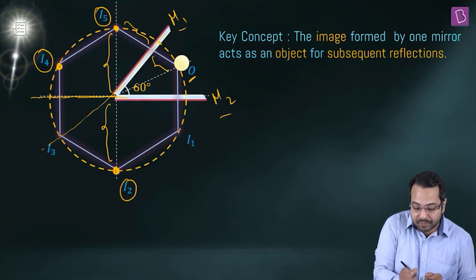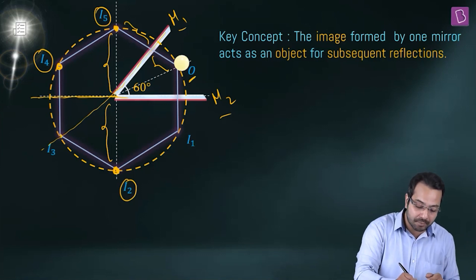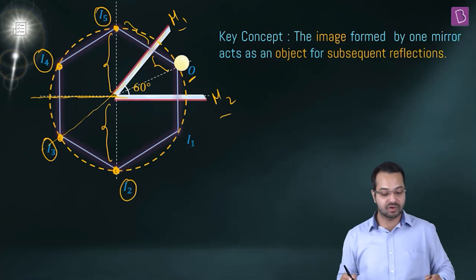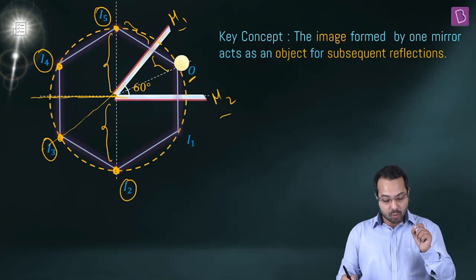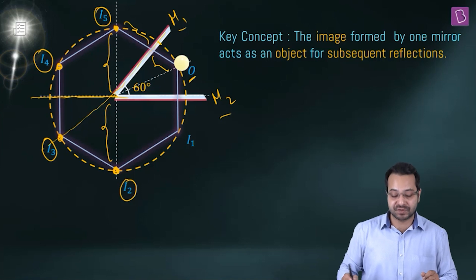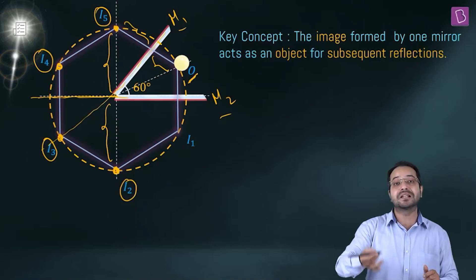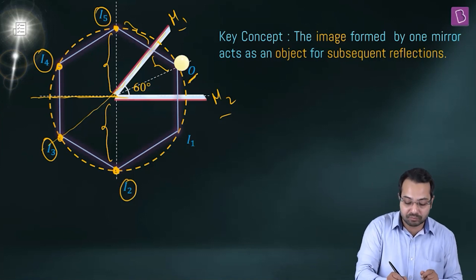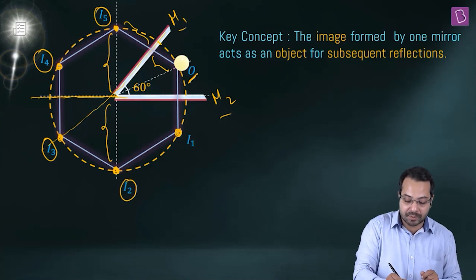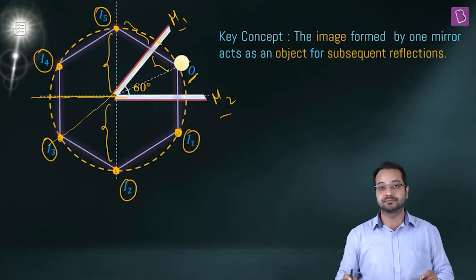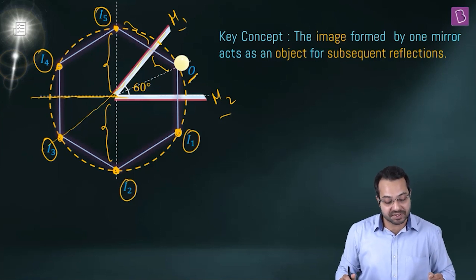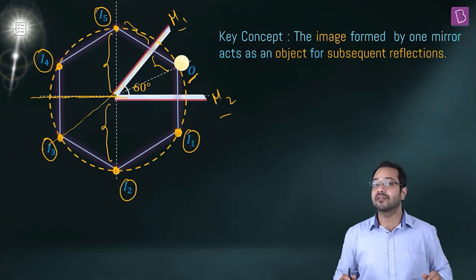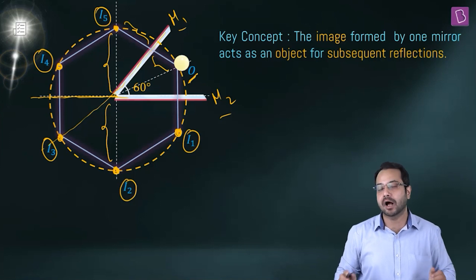For M2, another image is formed here. We've now reached this point. We also consider the direct reflection of the object by M2, which forms an image here. Counting all images, there are five images — that is the answer.